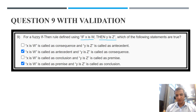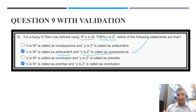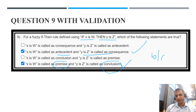Question 9: for a fuzzy if-then rule — if X is W then Y is Z — which statements are true? X is W is called the antecedent and Y is Z is called the consequent. The antecedent is also known as the premise, and the consequent is also known as the conclusion. So options B and D are both correct — this is a multi-select question, not MCQ.